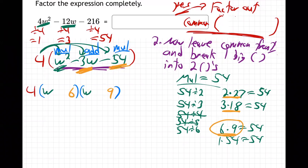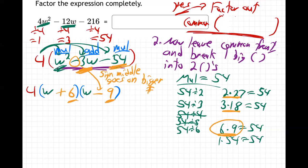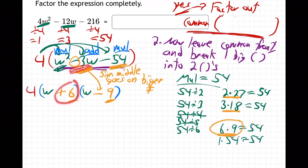Now, how are they going to add to be negative three? Remember the rule: the sign in the middle — the negative — goes on the bigger number. Nine is bigger than six, so nine gets the negative and six stays positive. Positive times negative is negative, so they multiply to be negative 54, and six minus nine equals negative three. That's exactly what we need.